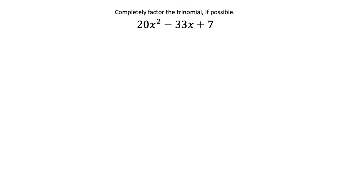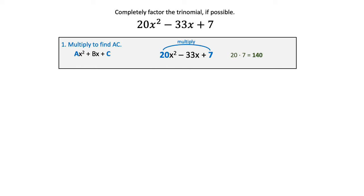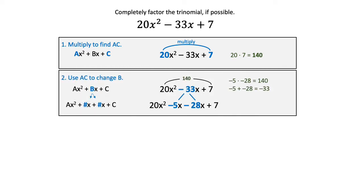So the basics of the AC method, the first thing you're going to do is multiply to find AC, and then you're going to take that number and you're going to break apart B. So you're going to take the trinomial and you're going to break B apart and write four terms instead of three terms. Then finally you're going to use grouping to finish factoring the expression.